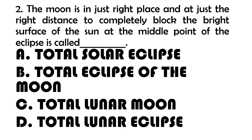Number 2. The moon is in just the right place and at just the right distance to completely block the bright surface of the sun; the middle point of the eclipse is called blank. A. Total solar eclipse. B. Total eclipse of the moon. C. Total lunar moon. D. Total lunar eclipse.